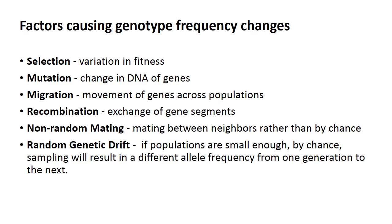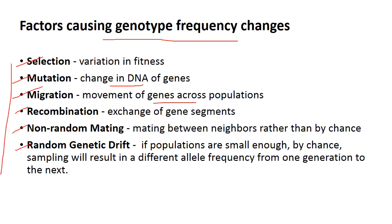Now let's talk about the factors that cause genotype frequency changes and allele frequency changes in a population. These are: selection, mutation (meaning the change), migration (meaning the movement of genes across the population), recombination, non-random mating, and random genetic drift. These are the factors that cause genetic frequency changes in the population.